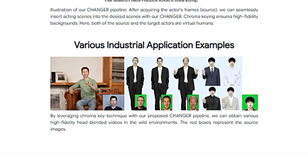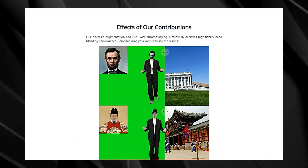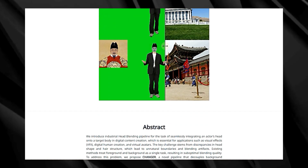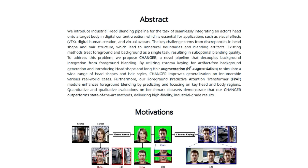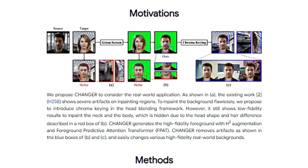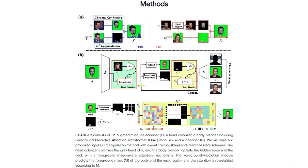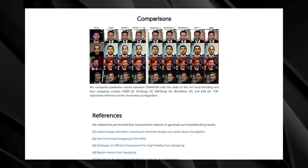Second, Changer employs H2 Augmentation (head shape and long hair augmentation), training on a vast dataset of diverse head shapes and hairstyles, making it incredibly adaptable to real-world scenarios and minimizing jarring mismatches. Finally, Changer leverages the Foreground Predictive Attention Transformer (FPAT) — think of it as a super-focused artist meticulously blending crucial areas like the neck and hair, ensuring a seamless and natural transition between the actor's head and the target body. The result is high-fidelity head blending that looks astonishingly realistic, outperforming existing methods and setting a new standard for professional-grade results.